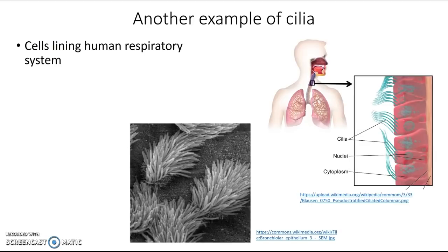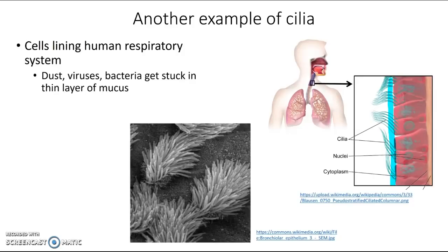Another example of cilia can be found in your own body, on the cells lining your respiratory tract. Each of these pink blobs is a cell, and they all have cilia. Under a scanning electron microscope they look like tiny hair-like structures. These cells create a thin layer of mucus, and every time you inhale you bring in not only air but dust, pollen, bacteria, viruses — all sorts of stuff — and those all get stuck in this thin layer of mucus.